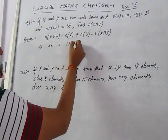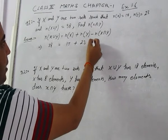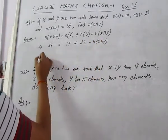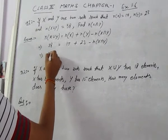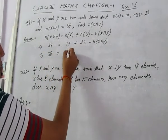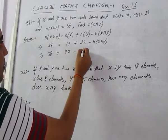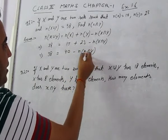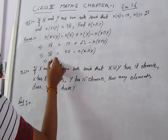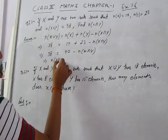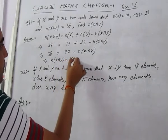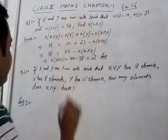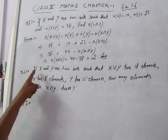We get 38 = 17 + 23 = 40 minus number of elements in X intersection Y. Transferring this side, we get number of elements in X intersection Y is equal to 40 minus 38, which is 2. Answer: 2.